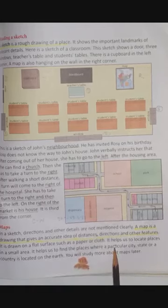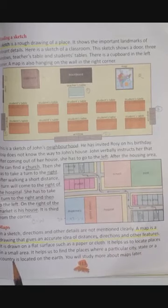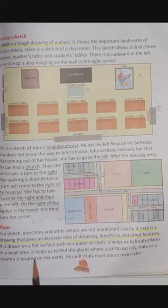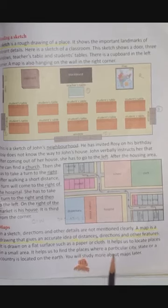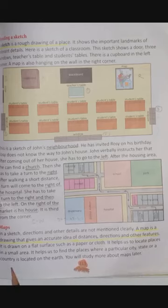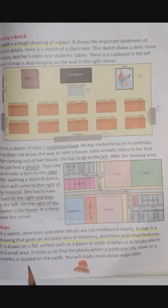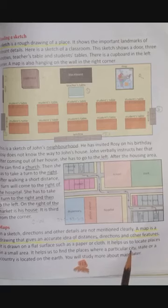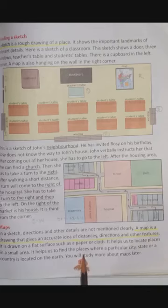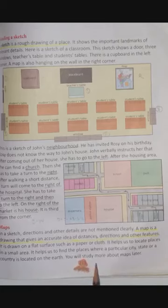It helps us to locate places in a small area — छोटी-छोटी जगहों के बारे में यहाँ बताया जाता है। It helps us to find the places where a particular city, state or country is located on the earth — पृथ्वी के ऊपर जितने भी देश, राज्य या शहर हैं, वो किस जगह पर हैं, इसको दिखाने में map help करता है। We will study more about maps in the next class.